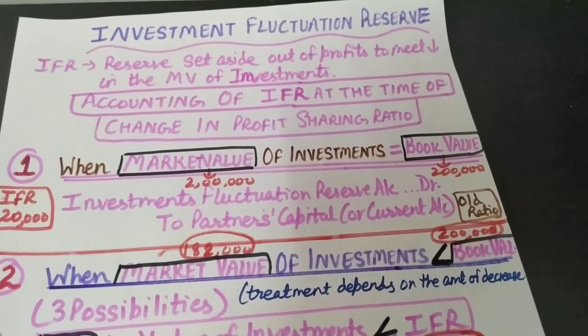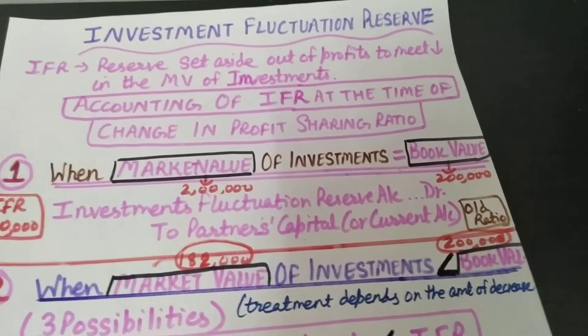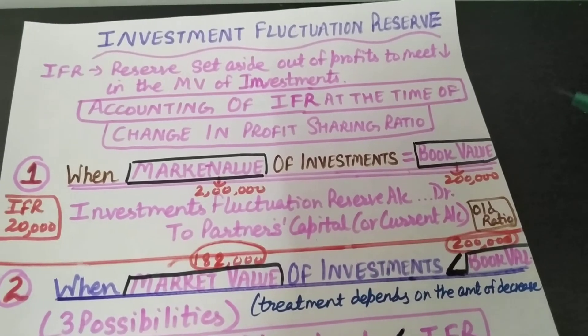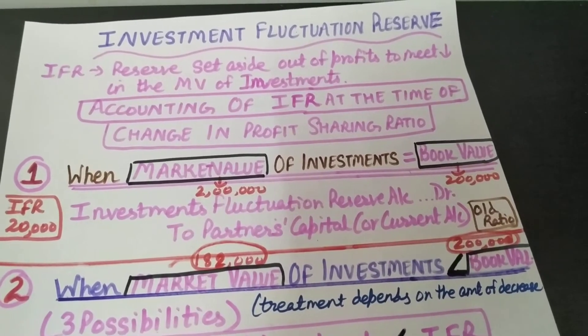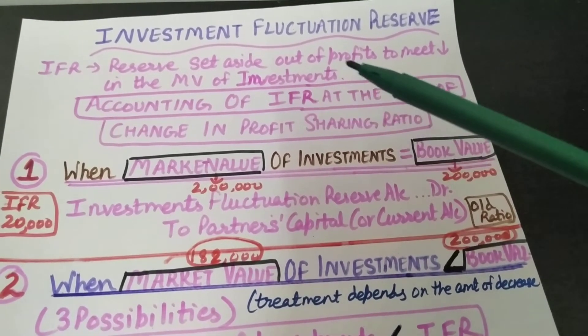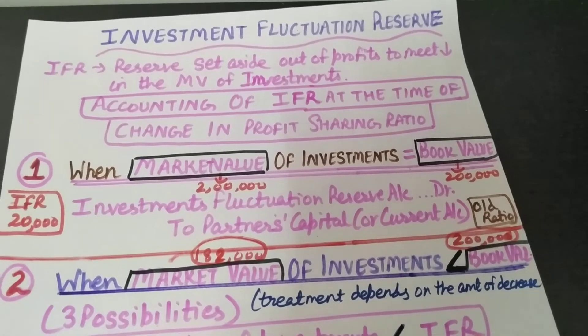Hello friends, I am Vandana Khatri, welcome to my channel. We are doing Chapter 4, Change in Profit Sharing Ratio, and today's topic is Investment Fluctuation Reserve.